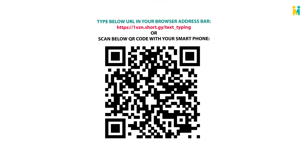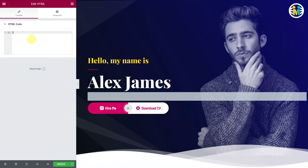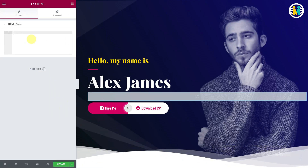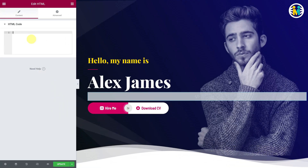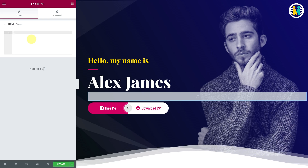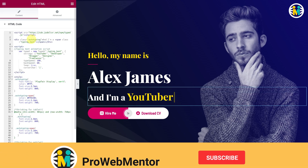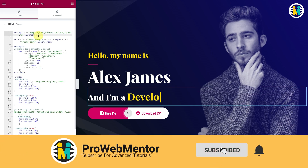To create the same type of text typing animation as shown in the video introduction, we will be requiring a code snippet. If you don't know anything about coding, don't worry — you can download the required code after scanning the QR code or by directly visiting the link shown here, and then follow along with me. Copy the complete code snippet from the downloaded file, and then paste the same code snippet inside the HTML widget input field.